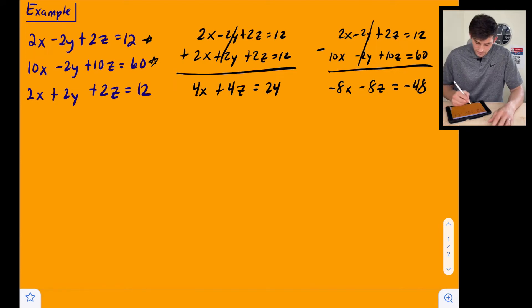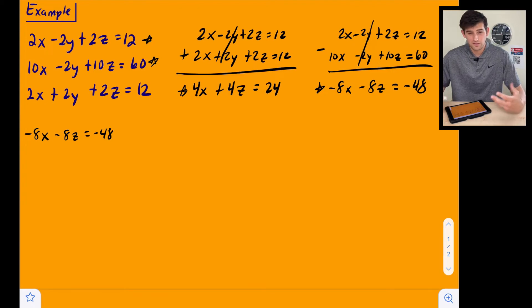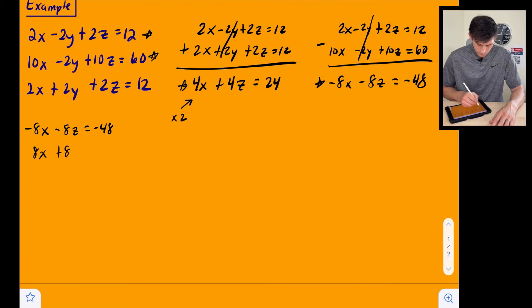And so now we have these two equations that we can go ahead and write together to solve for one of our variables. So let's bring it down here to the left and let's write my equation that's on the right, negative 8x minus 8z equals negative 48. And now this equation where we have a 4, let's multiply that one by 2. This equation we're going to multiply by 2. So we have 8x plus 8z equals 48.